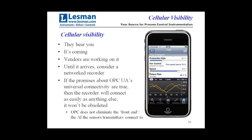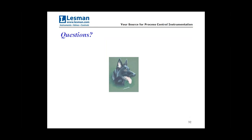People want cellular visibility — they want to see this on a cell phone. Our vendors hear that, they're working on it, and it's coming — but it isn't here today yet. So until that happens, you might really want to consider a network recorder. If OPC UA's promise about universal connectivity is really true, then the recorder will connect as easily as anything else and won't be obsoleted — because in the end, you still need something to hook the thermocouple or transmitter up to. None of the OPC stuff eliminates the front end that connects to the things in the field. So you can get on the bandwagon early and put the data on your desktop.